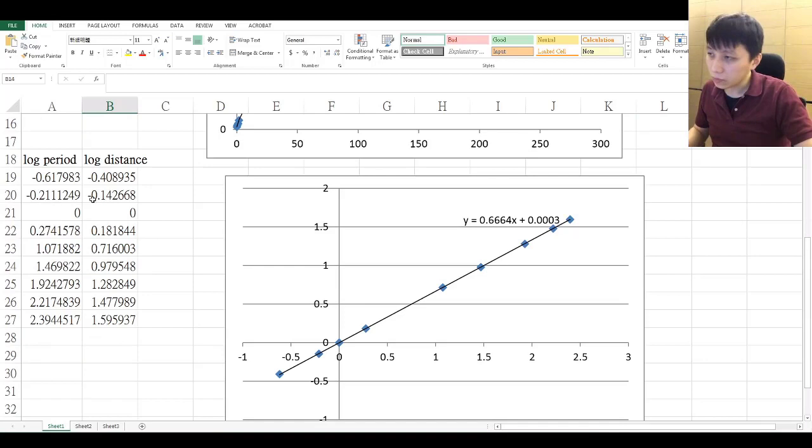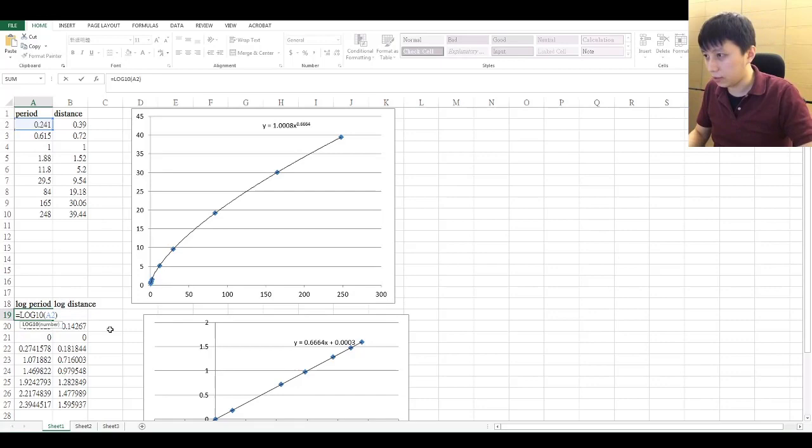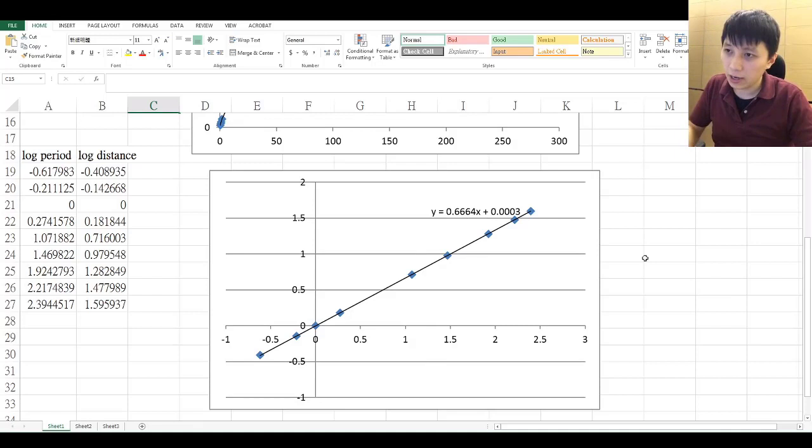So down below, these are the corresponding log values of the period and distance. So I use obviously the log function on Excel, so they will be the corresponding values. Okay, and so using that, we'll be able to find out a new graph, which is this one.